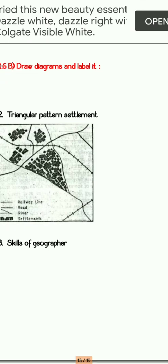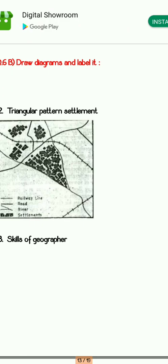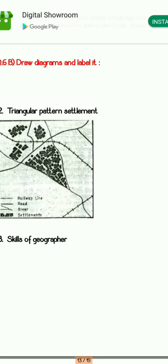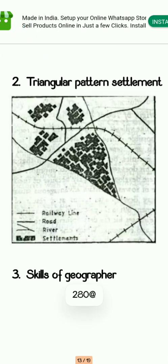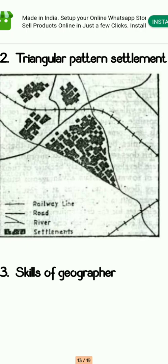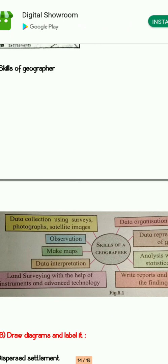Next is the triangular pattern settlement. For triangular pattern settlement, you have to converge two roads. Wherever two roads meet, that junction takes on a cone-type shape — it looks like a triangle. This is how the triangular type of settlement looks.